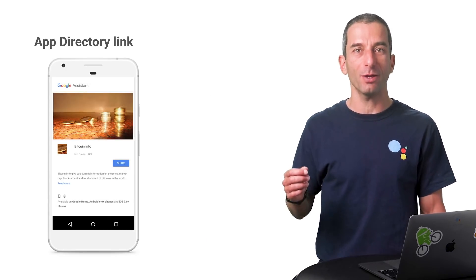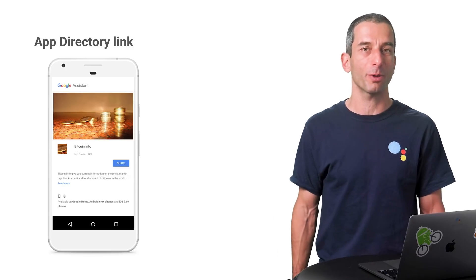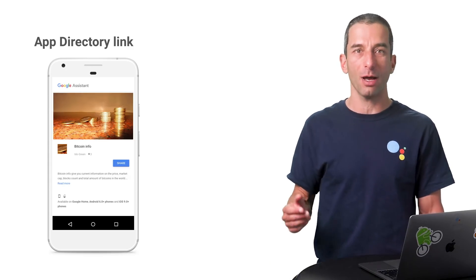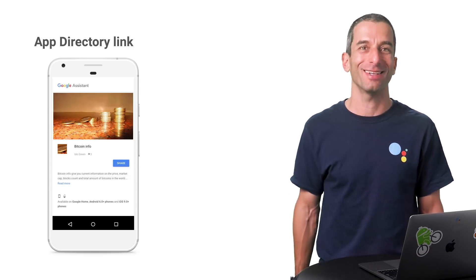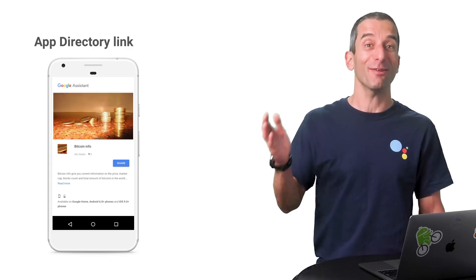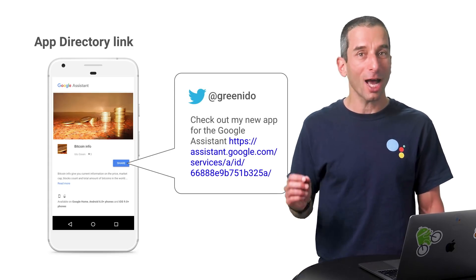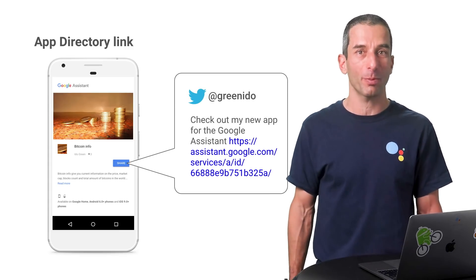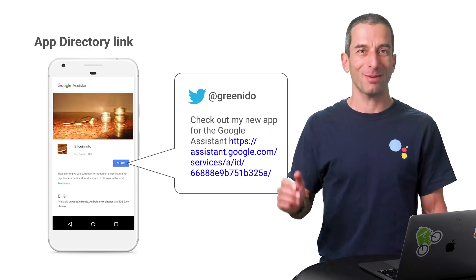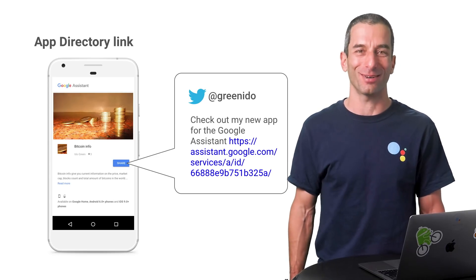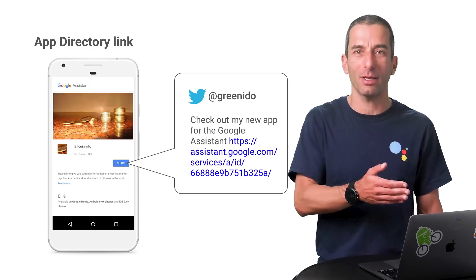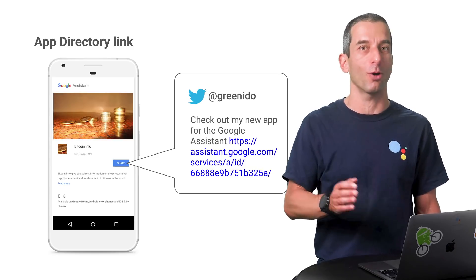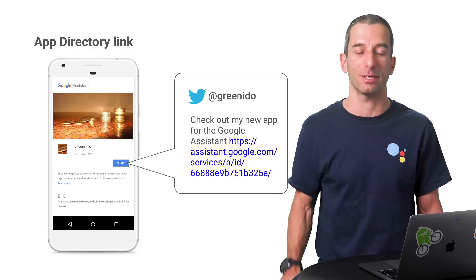Finally, driving users to your App Directory page will give them a chance to try it out, rate it, and share it — meaning even more users. You can hyperlink to your App Assistant Directory page and promote it just about everywhere: share it on social media, blog about it, create an ad banner, or offer it to users from your current services.